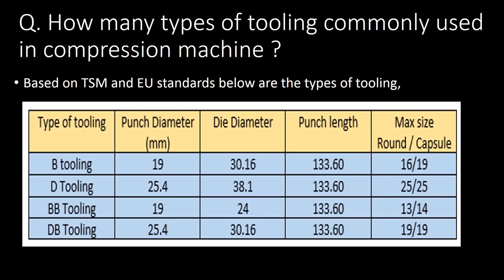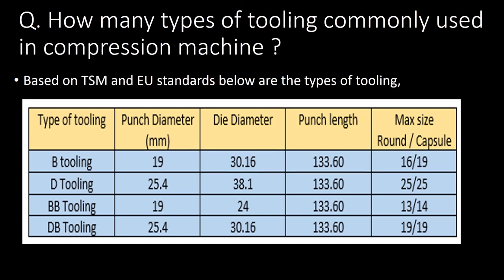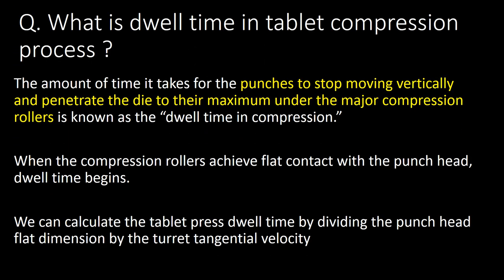How many types of tooling are commonly used in compression machines? Based on TSM and EU standards, the types of tooling are: B tooling, D tooling, BB tooling, and DB tooling. For all toolings, the punch length is the same — 133.60 mm — however, other parameters like punch diameter and max tablet size change with the tooling. You can refer to the table below for details.